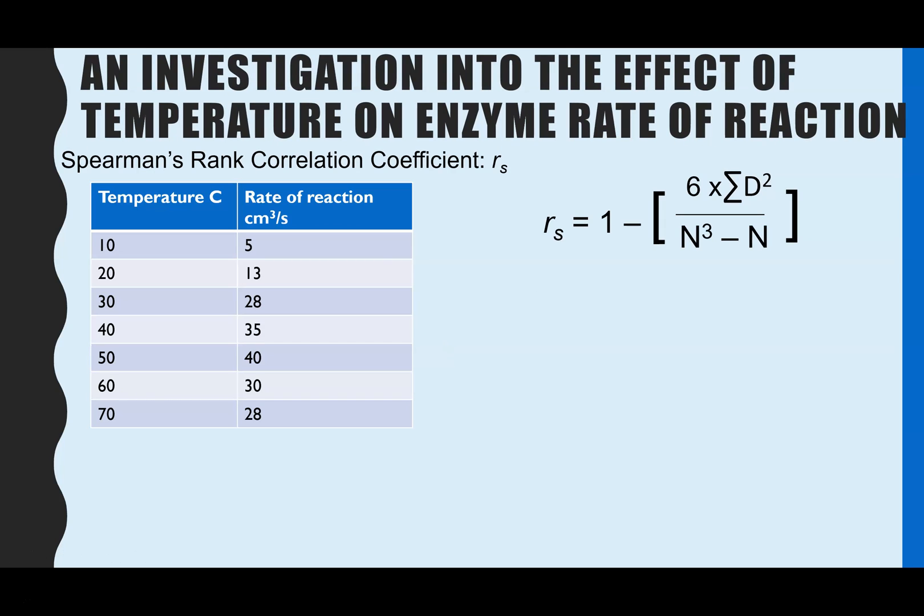So I've used this particular data. We've got seven different temperatures from 10 to 70 and here are the rates of reaction. Now as I said you don't actually need to know this formula. You wouldn't be asked to calculate it at all but I am going to go through it with you because you could be asked to use this formula to write up one of your required practicals throughout the course. So this should help with that.